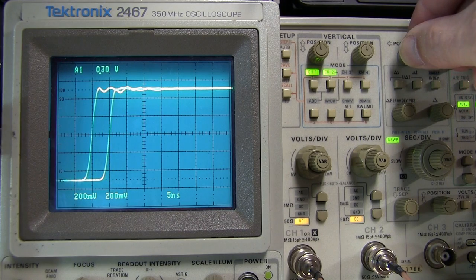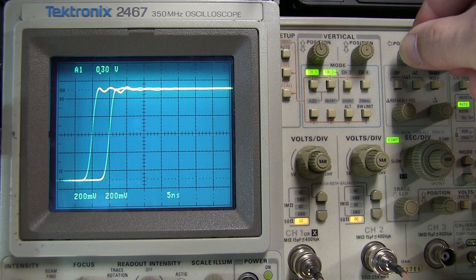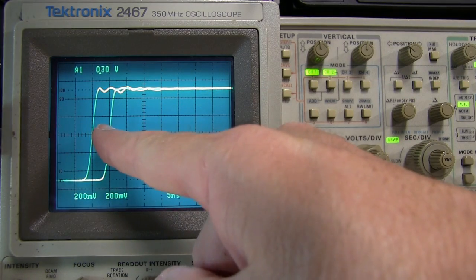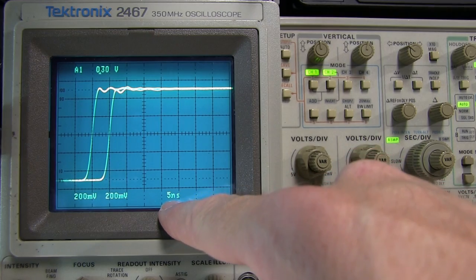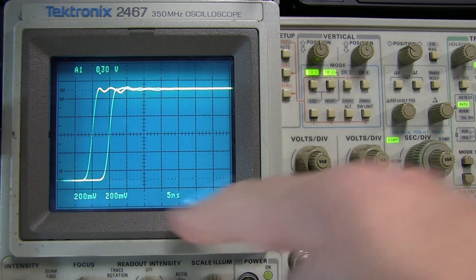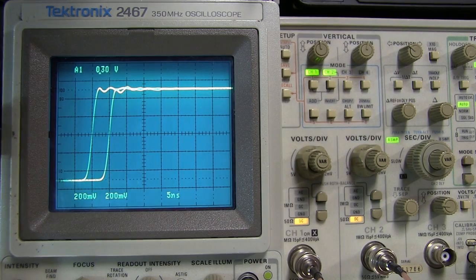And of course if we line up with one of the major divisions here, we can see that we're essentially exactly one division away for the second signal, and at 5 nanoseconds per division, that matches the 5 nanosecond delay that I had dialed in on the signal generator.